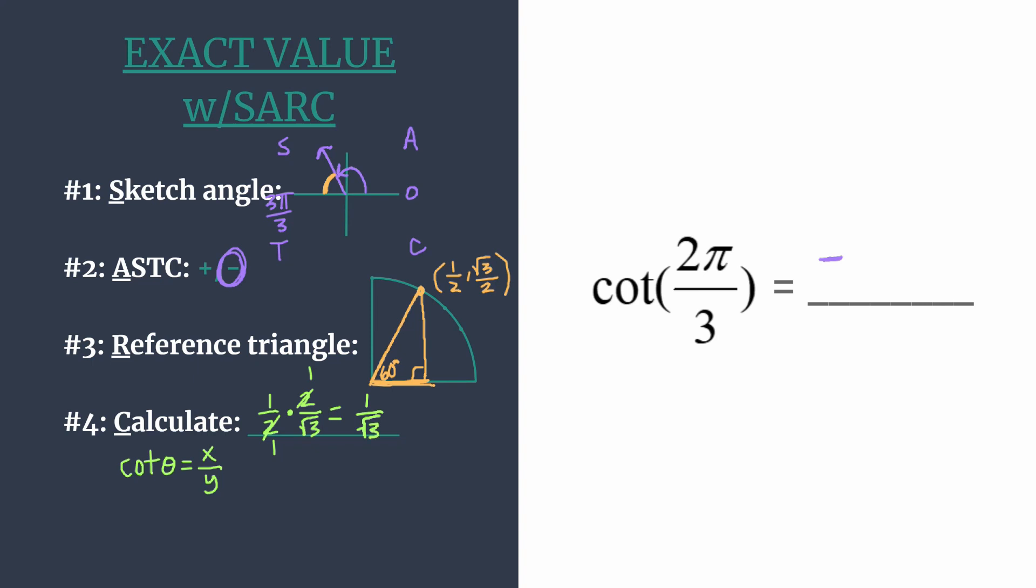So we, of course, want to rationalize this. You may just know off the top of your head what this rationalizes to. If not, all you need to do is multiply your answer by the square root of 3 over the square root of 3.